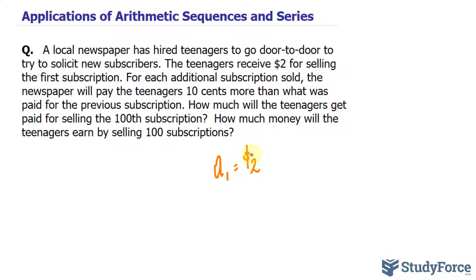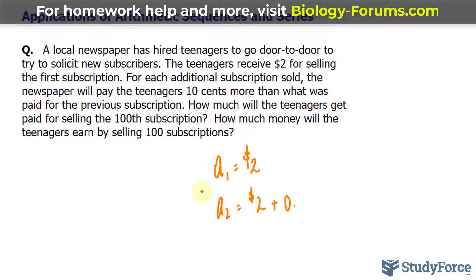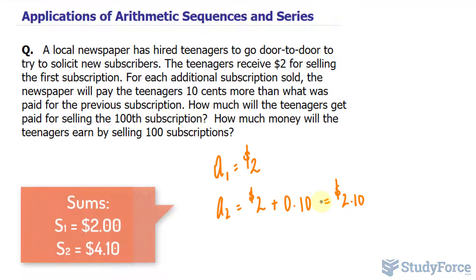In the next subscription, let's say A sub 2, they will have earned $2 plus $0.10 given that they had one sold previously. So they will earn $2.10 if they sell a second subscription and in total it would be $4.10.